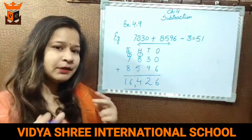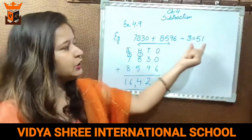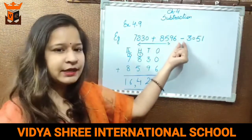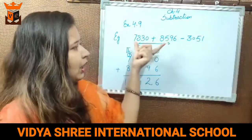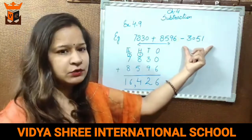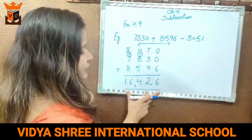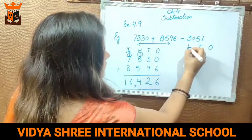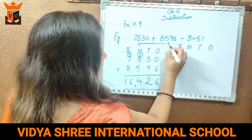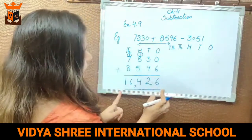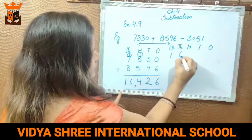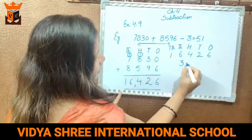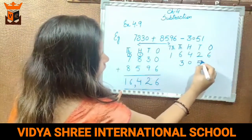Now, what we have to do? Hume is sum mein se jo last number diya hua hai use minus karna hai. Because after addition, the next sign is subtraction. Jo sum aaya — 16,426 — us mein se subtract karna hai 3,051. Here you can see 5 digits, so we will write 5 place values: ones, tens, hundreds, thousands, and ten-thousands. We write 16,426 and below it 3,051.